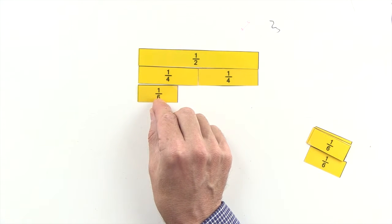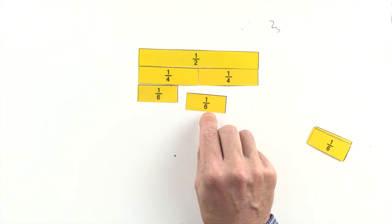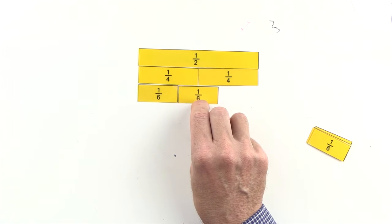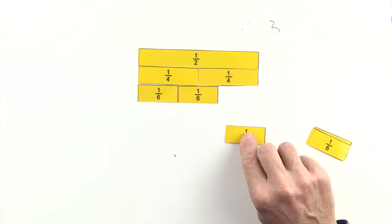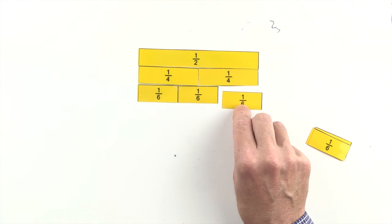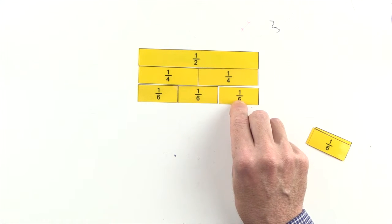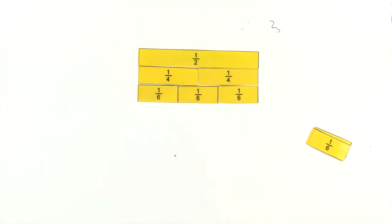One sixth and two sixths are less than one half, but three sixths are equal to one half. So three sixths and one half are equivalent fractions.